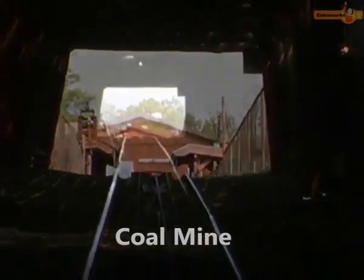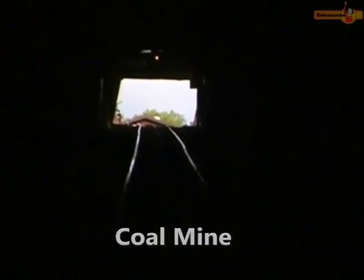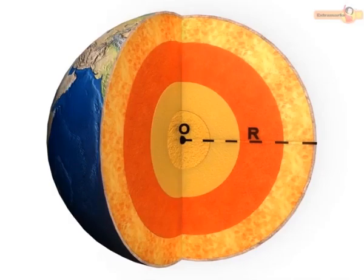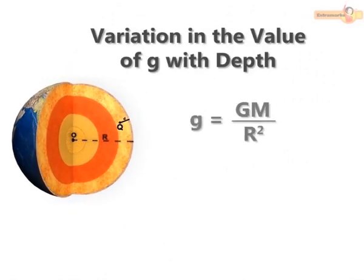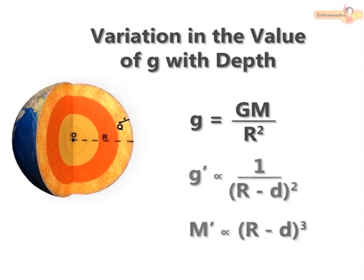Let us now find the acceleration due to gravity at a depth D. Consider a point Q at depth D below the earth's surface. Though the effective radius for this point decreases, which should have caused an increase in the value of G, however the effective mass for this point also decreases. The combined effect of a decrease in the effective radius and mass of the earth results in a decrease in the value of G.